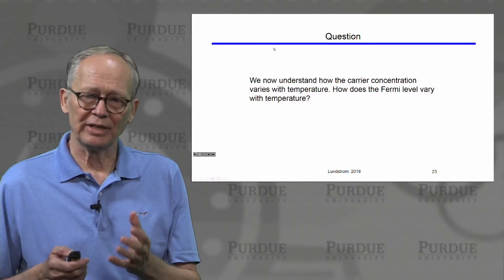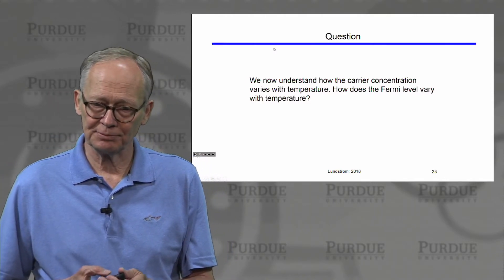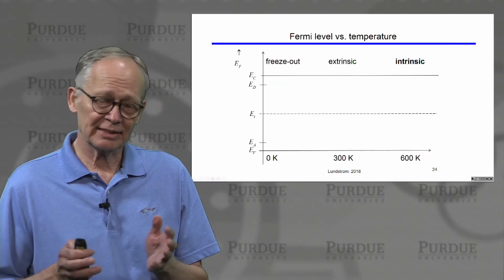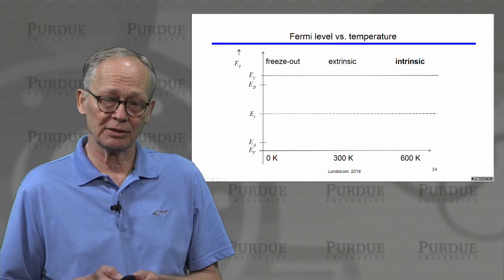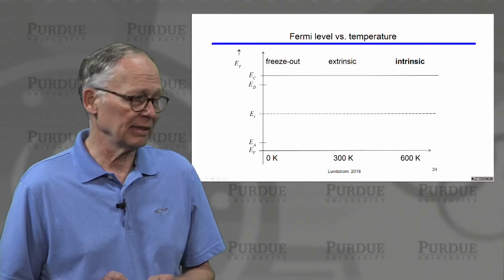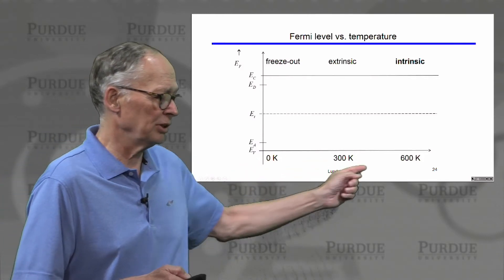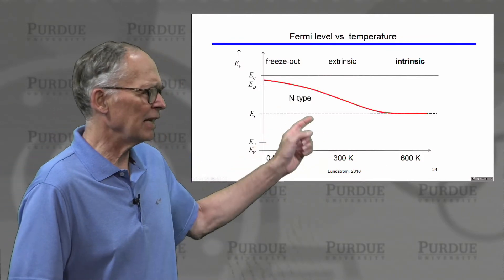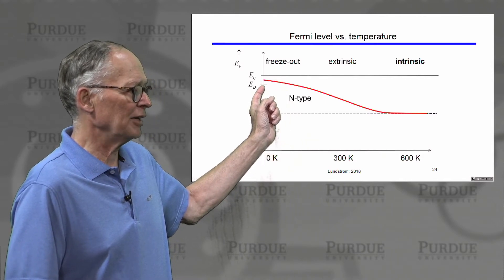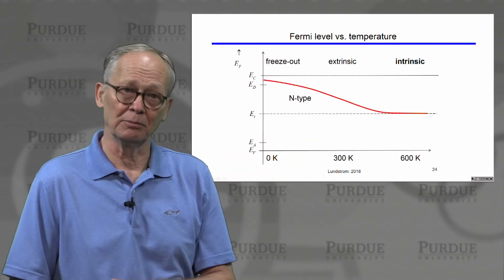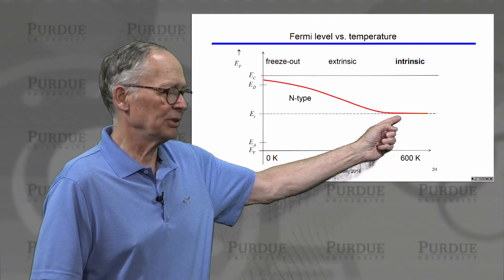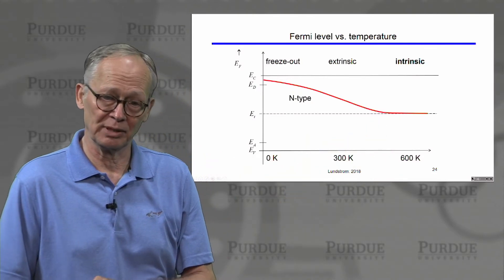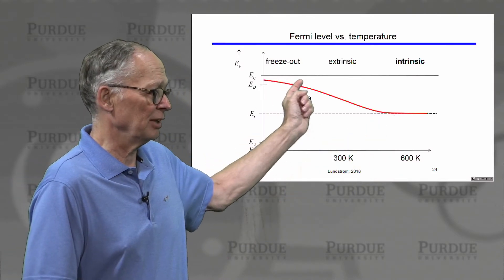Now that we understand how carrier concentration varies with temperature, how does the Fermi level vary with temperature? For an n-type semiconductor, the shape looks like this: at low temperatures all donors are occupied so the Fermi level must be above the donor level. At very high temperatures the semiconductor is intrinsic so the Fermi level is near the middle of the gap, and we smoothly transition from high energy to mid-gap as temperature increases.